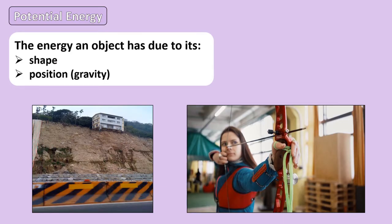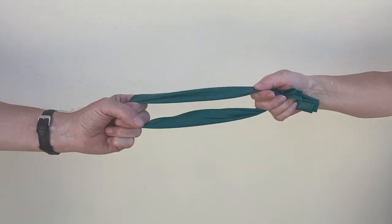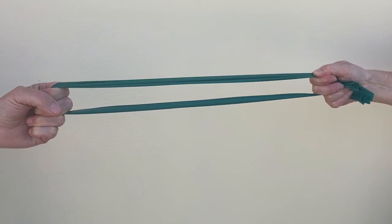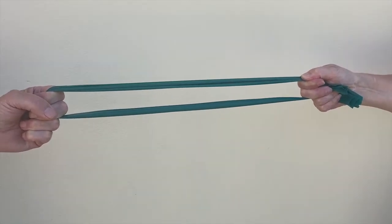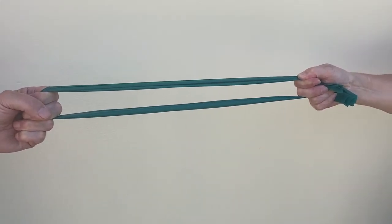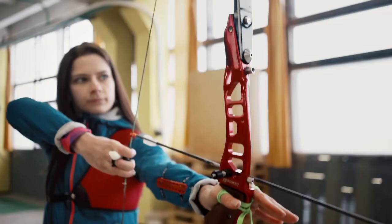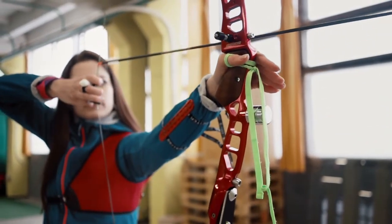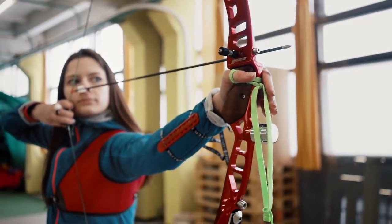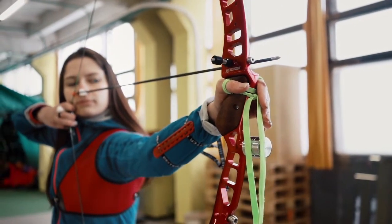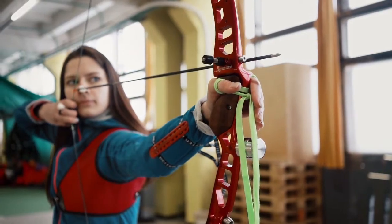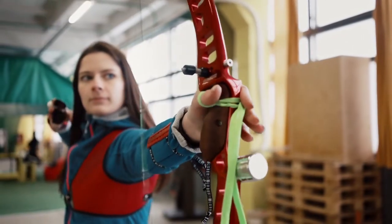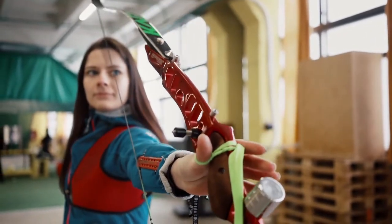Potential energy is the energy that an object has due to its shape or its position. Take a look at this elastic band — when the band is stretched, even though it isn't moving, it contains lots of potential energy because if it's let go, it has the potential to move. Similarly, the string of a bow and arrow contains lots of potential energy. When the archer draws the string back, even though neither are in motion, both the string and the arrow have lots of potential energy due to their shape.